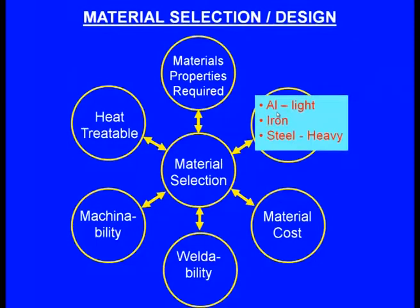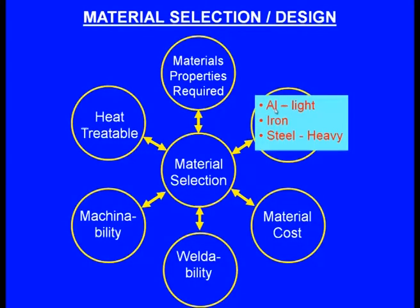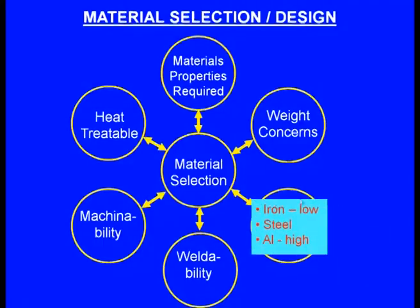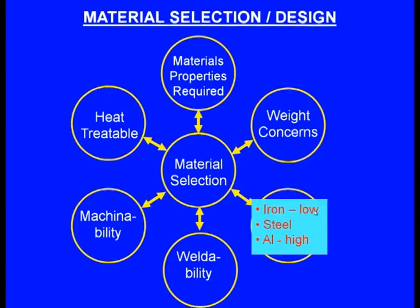Regarding weight concerns, common cast materials are aluminum, iron, and steel. Aluminum has lighter density, iron has moderate density, whereas steel is very heavy. For material cost: iron has very low cost, aluminum is very high, whereas steel has a moderate cost. Depending upon the requirement, we can choose accordingly.